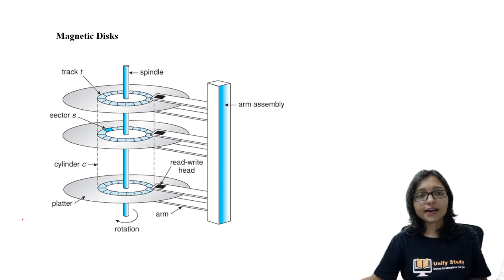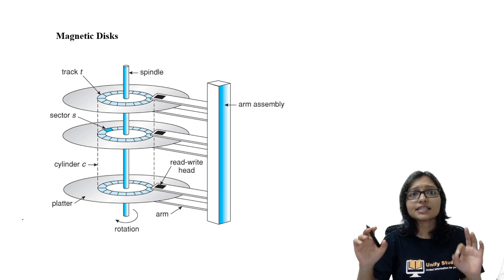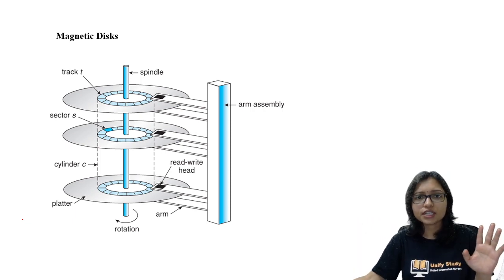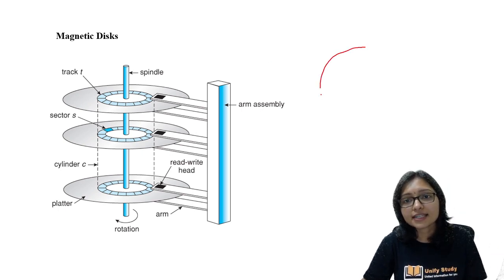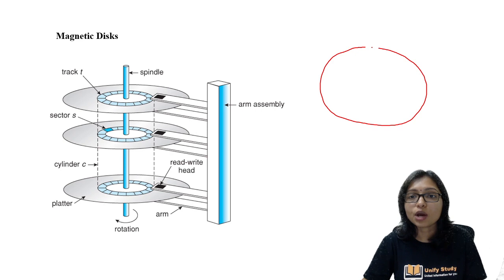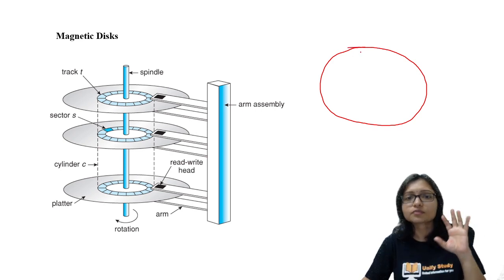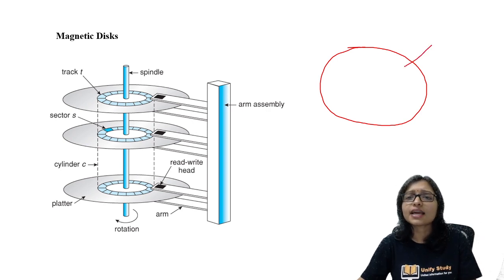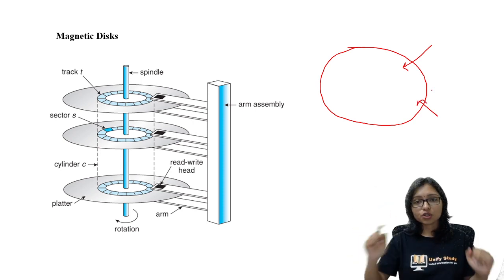So see here — what is a disk? This is just like a CD, and you all are well aware of what a CD is. The disk works just like a CD. The total area of the disk is a surface. There are some platters. A double-sided platter means it is like a double-sided CD — you can write on this side and also on the opposite side.